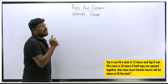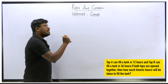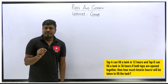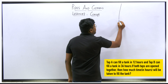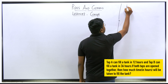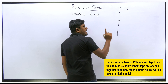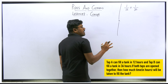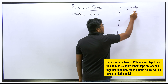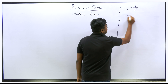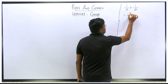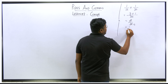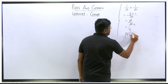Let me take one simple basic question: Tap A can fill a tank in 12 hours. Tap B can fill a tank in 36 hours. If both taps are open, how many hours will it take to fill the cistern? What we usually do: tap A fills in 12 hours so we write 1/12; tap B fills in 36 hours so 1/36. If both taps are open we add both: take LCM of 36, which gives 4/36, cancel to get 1/9, so the answer is 9 hours.